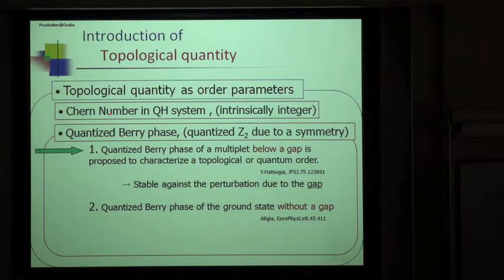The most famous example of the topological quantity is a Chern number in the quantum Hall system, which is intrinsically integer. We focused on the quantized Berry phase, which is quantized Z₂ value, zero or π.